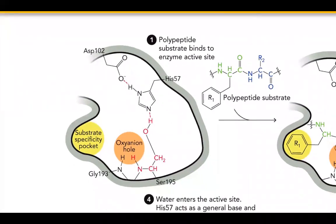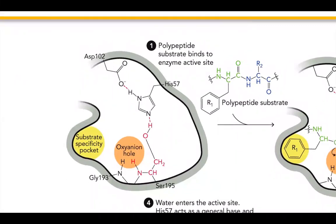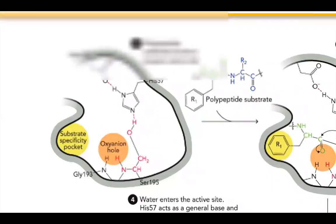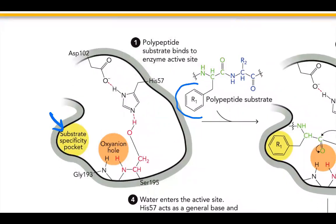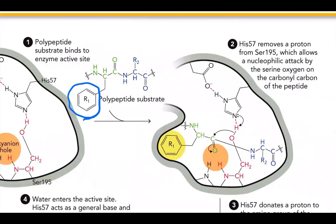Here's our active site. Remember that chymotrypsin is specific for certain residues — it only cleaves in certain places. Why is that? Because we have a substrate specificity pocket. Guess what fits right in the pocket? Something with an aromatic ring. So if we have our aromatic ring, it's going to fit perfectly in our enzymatic pocket.